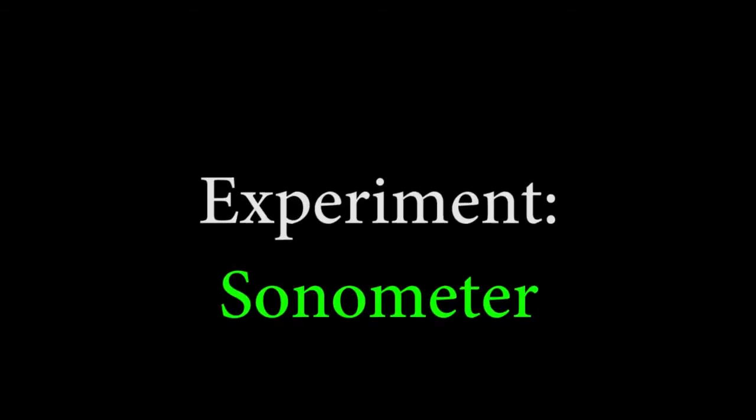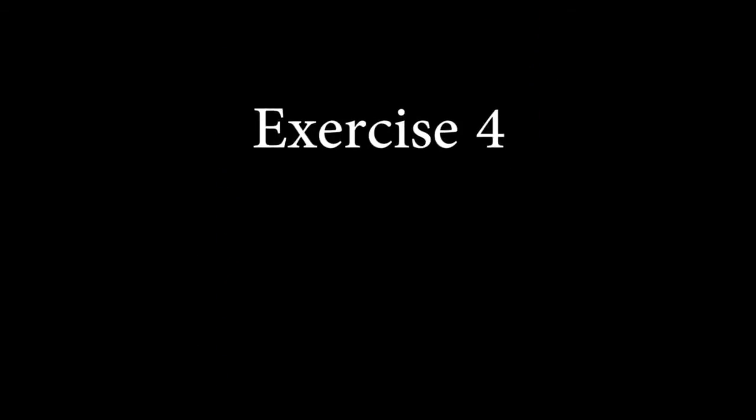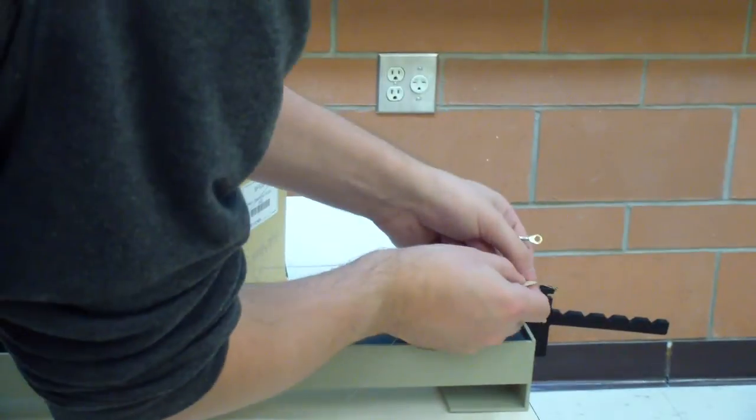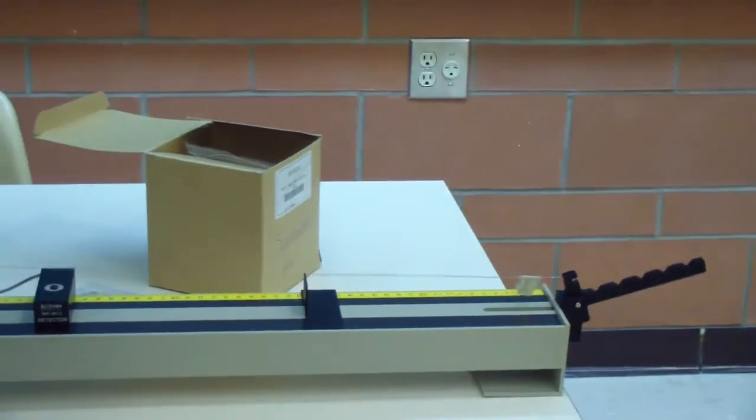In exercise 4, we'll be changing the mass density by using different guitar strings. Remove the first guitar string and repeat exercises 1, 2, and 3 for all other available string thicknesses.